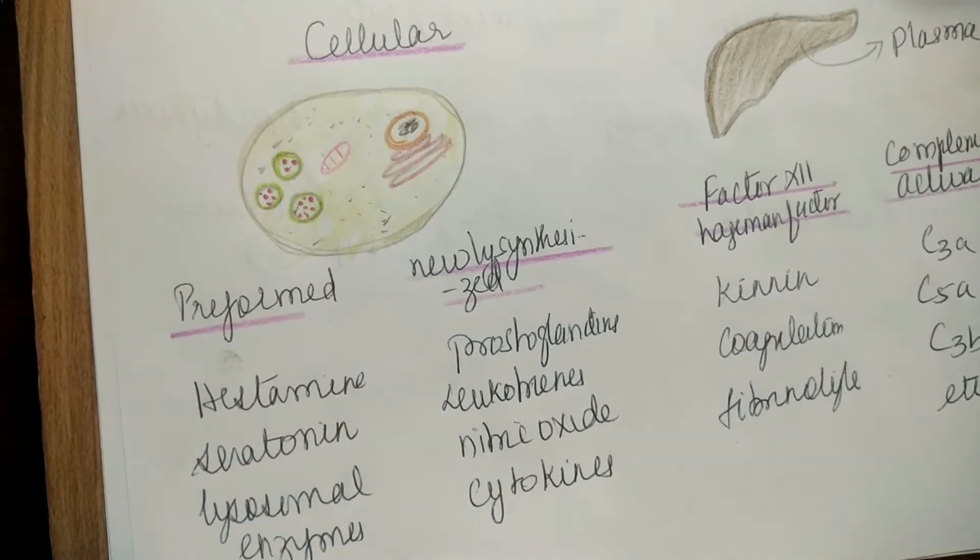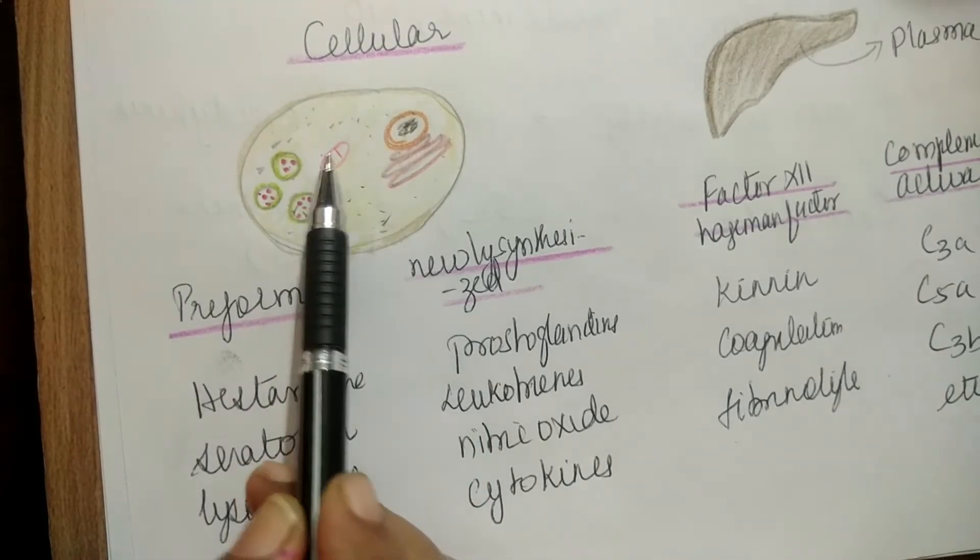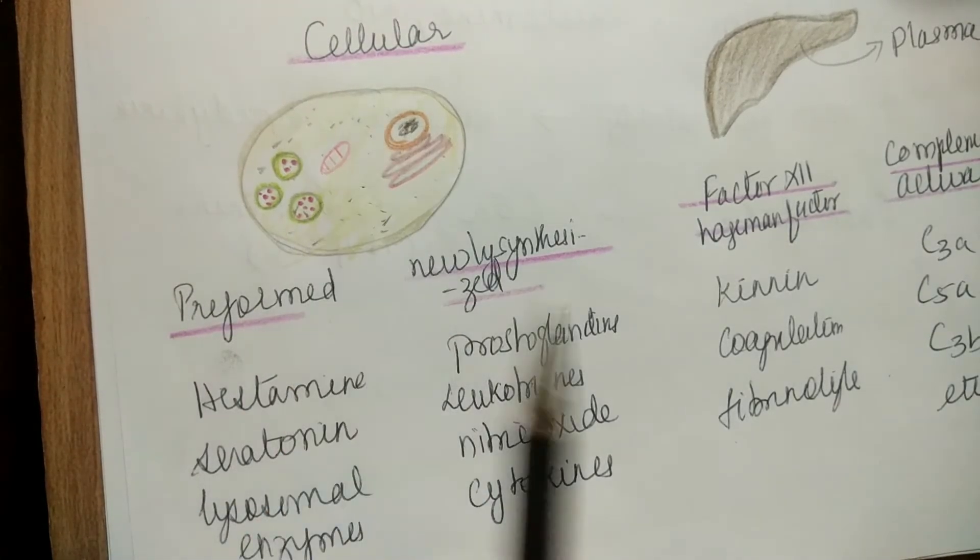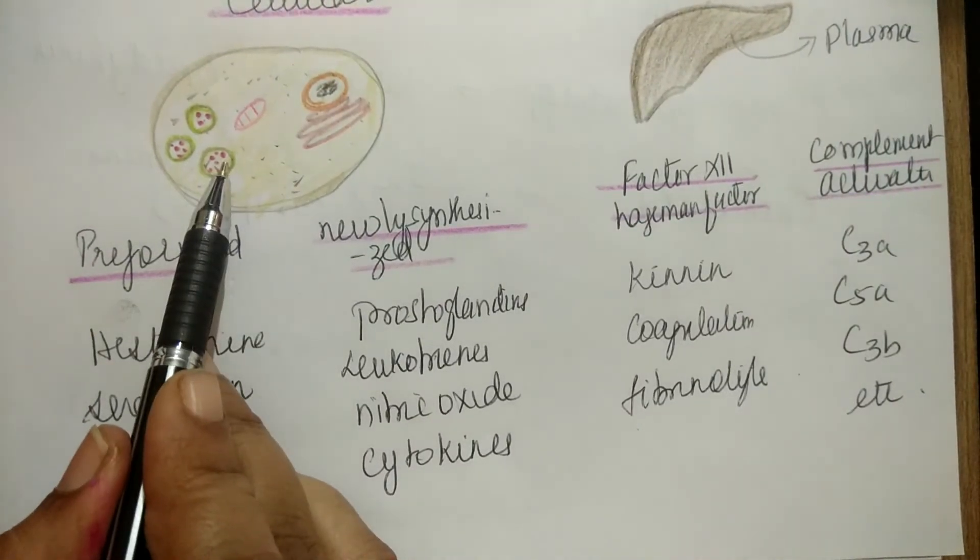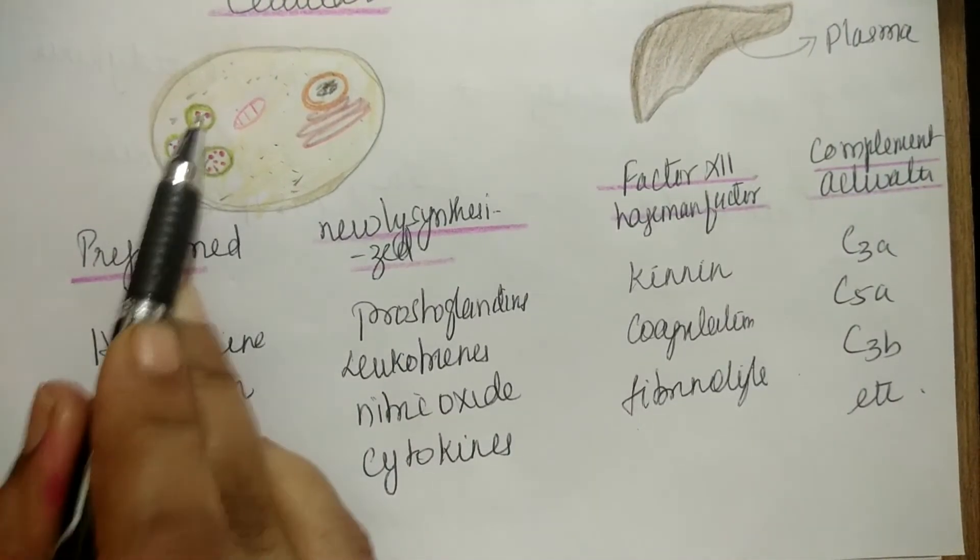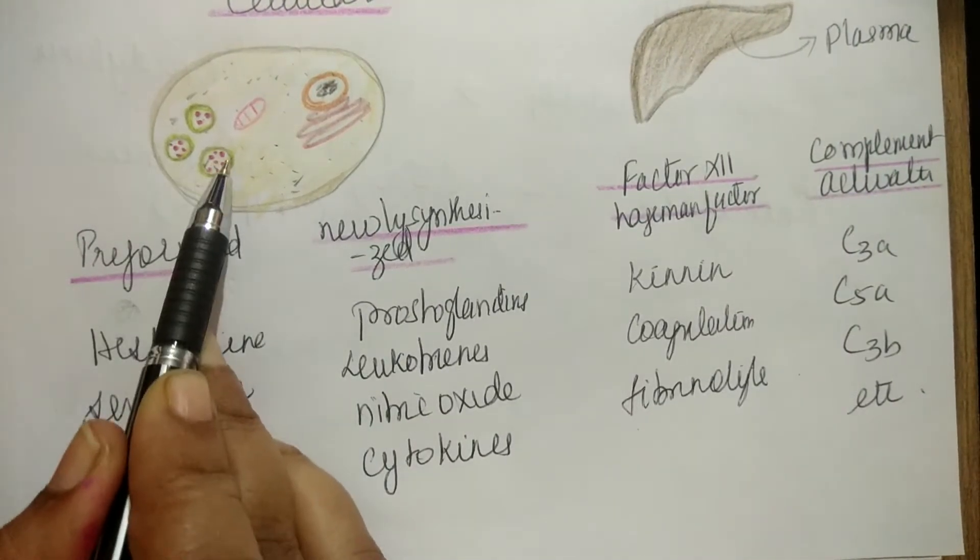It is a cell. This is the nucleus, endoplasmic reticulum, cytoplasm, and mitochondria. These produce chemical mediators.